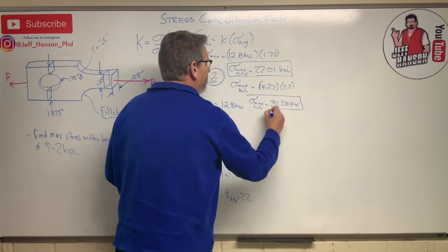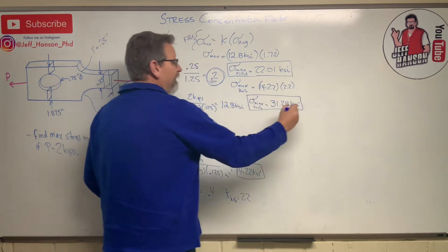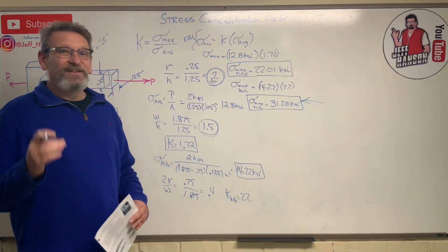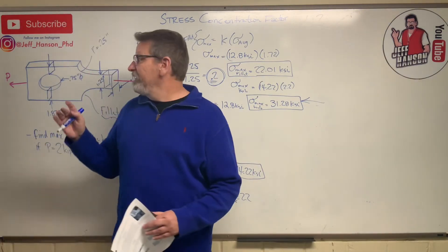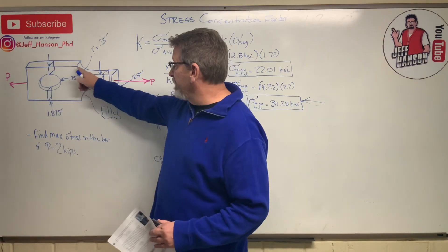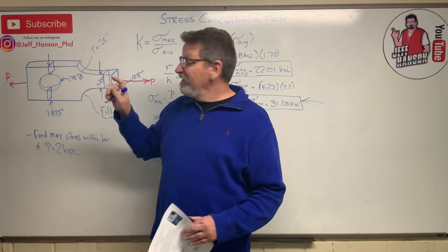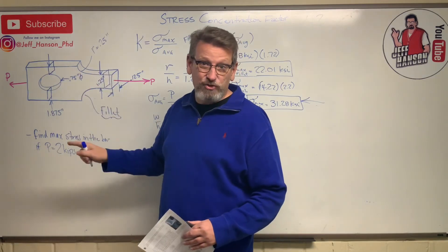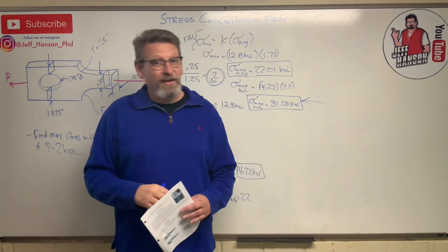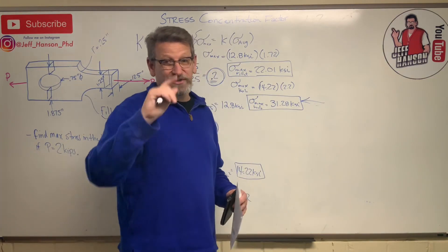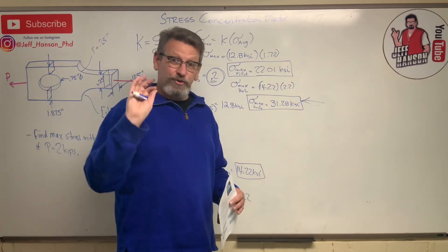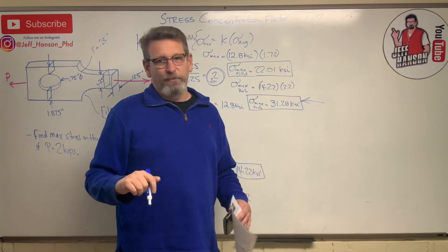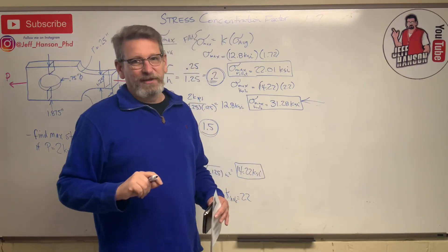The stress at the hole (31.28 ksi) is much higher than at the fillet (22.01 ksi). Note that if the fillet radius were made much smaller, the stress there would increase and might become the dominant stress. I hope this helps you understand stress concentration factors, stress risers, and stress flow. See you in the next video.